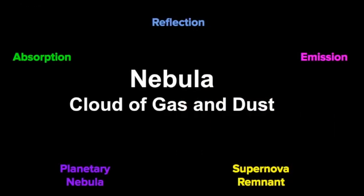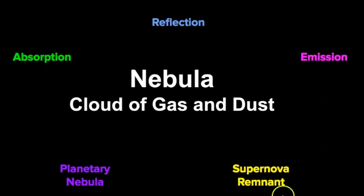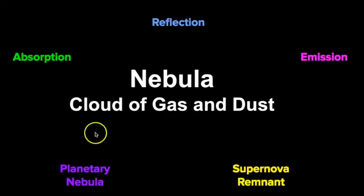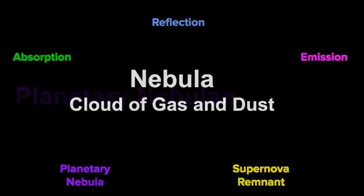To recap, we've explored the diffuse types of nebulae — the ones that do not have a definitive shape: absorption, reflection, and emission. Now let's look at the types of nebulae that do have a definitive shape.